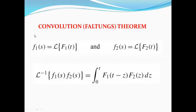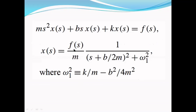We have a theorem for this: the convolution theorem. If L{f₁(t)} = F₁(s) and L{f₂(t)} = F₂(s), then L⁻¹{F₁(s)·F₂(s)} = ∫₀ᵗ f₁(t − z)·f₂(z) dz. We can apply this convolution theorem here because X(s) is the product of F(s) and 1/((s + b/2m)² + ω₁²).